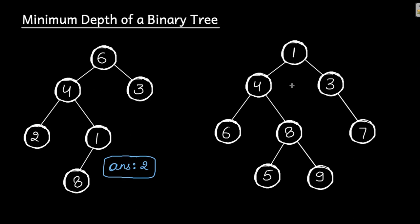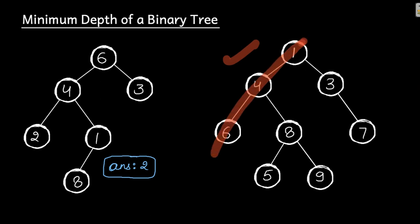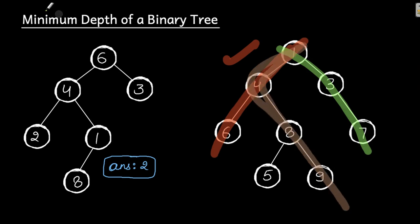Now let's take the next example. In this example we have four leaf nodes, so there are going to be four paths from root to leaf. The first one is this, the second one is like this, the third one is like this, and the fourth one you can consider like this. These are the four different paths.